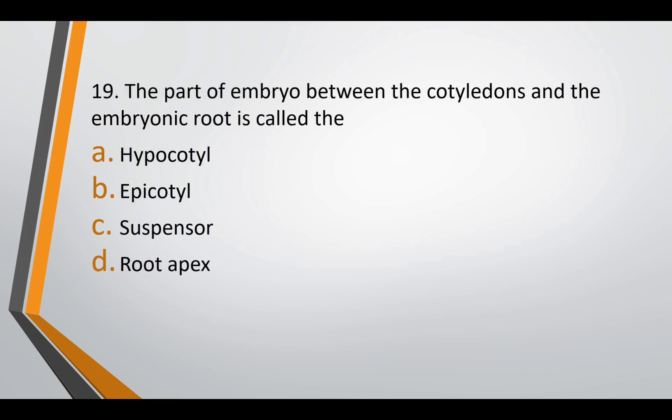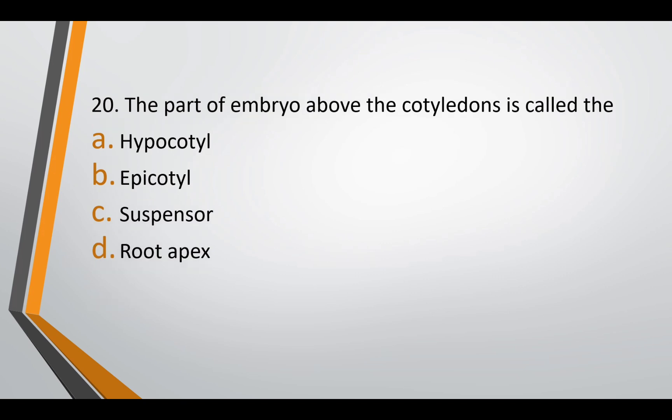Question nineteen: the part of embryo between the cotyledons and the embryonic root is — hypocotyl, epicotyl, suspensor, or root apex. The correct answer is option A — hypocotyl. Question twenty: the part of embryo above the cotyledon is called — hypocotyl, epicotyl, suspensor, or root apex. The correct answer is option B — epicotyl. So the part below the cotyledon is hypocotyl and above the cotyledon is epicotyl.